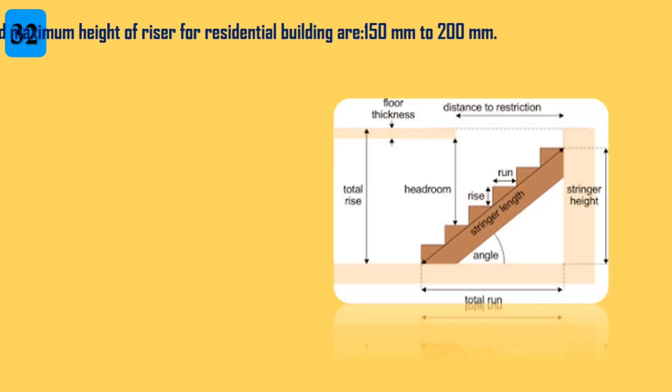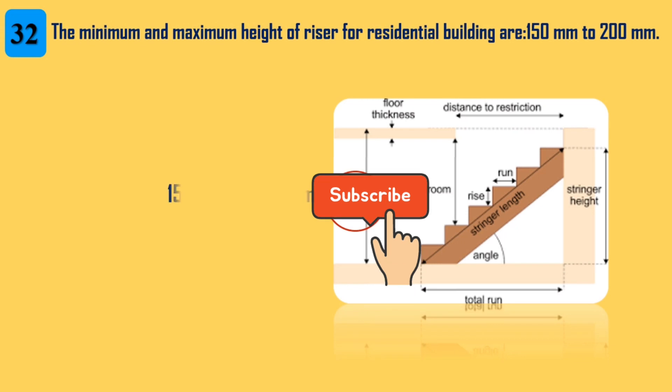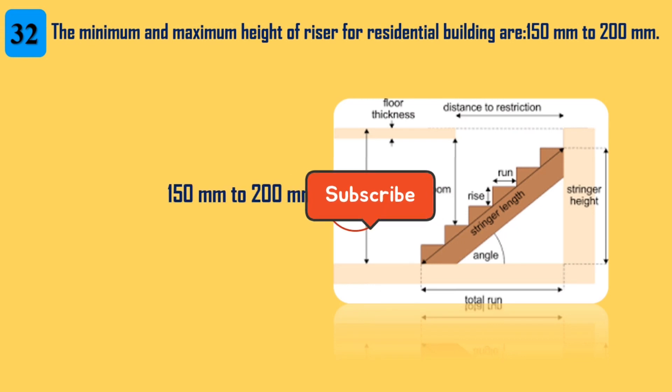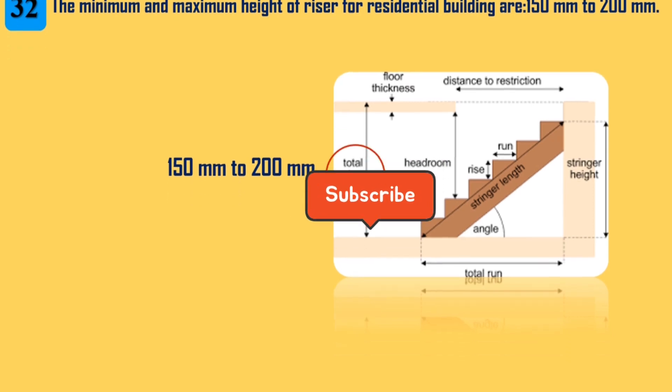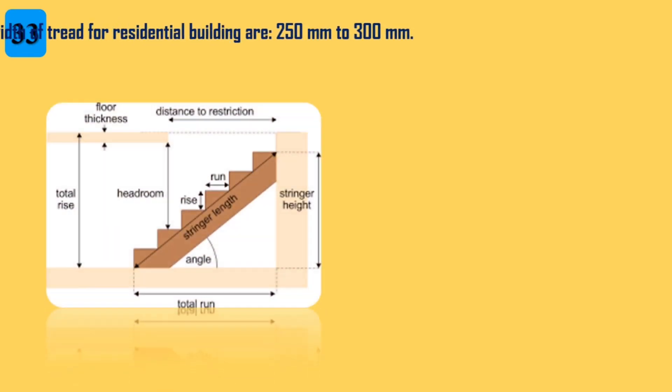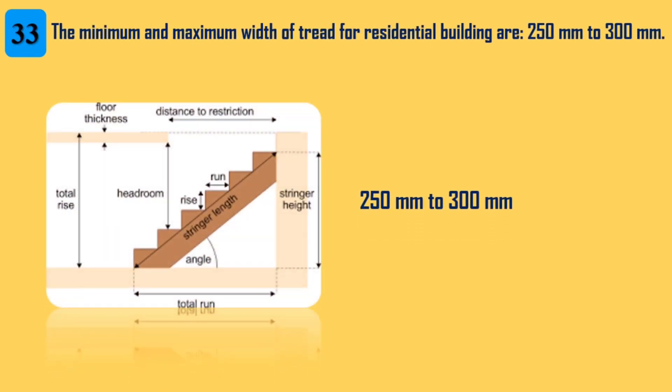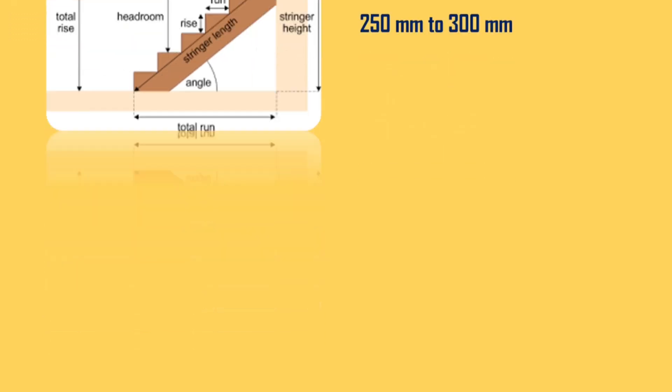32. The minimum and maximum height of riser for a residential building are 150 mm to 200 mm. 33. The minimum and maximum width of tread for a residential building are 250 mm to 300 mm.